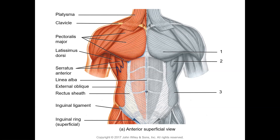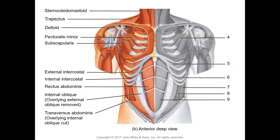Figure 14.4b shows the deep muscles of the anterior view. One important muscle not labeled in the previous figure but labeled here is the deltoid muscle — the big shoulder muscle whose surface curve forms the rounded shape of the shoulder. Make sure you can identify the deltoid in figure 14.4a. The pectoralis major and deltoid have been resected here to expose the deeper muscles.